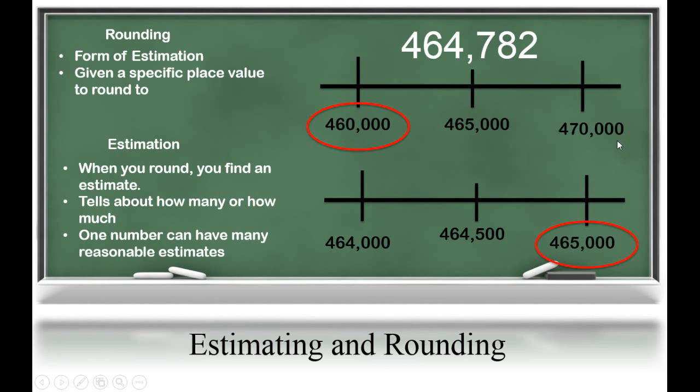Now, I need to come up with a midpoint so I can figure out where this number falls. That's going to be 465,000. I know that 464,000 is less than that. So I know that my number is closest to 460,000. So this number rounded to the nearest 10,000 would be 460,000.